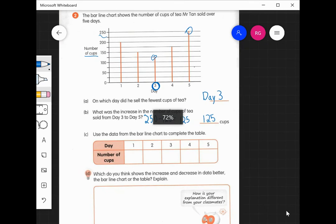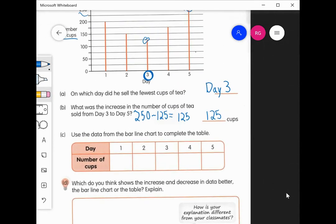Okay, so for the first day, that's 200, we can see very clearly there. That's 200. So let's write 200 in the first box.